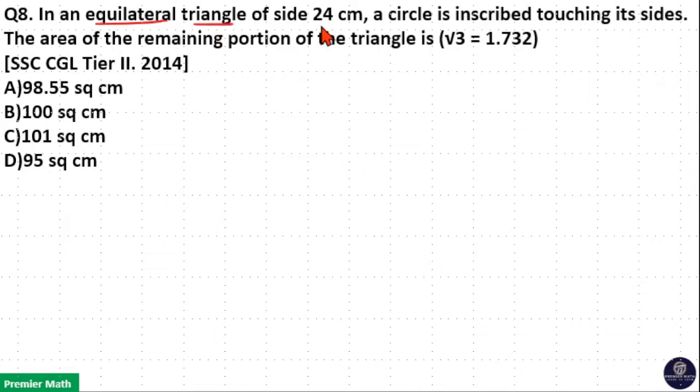In an equilateral triangle of side 24 cm, a circle is inscribed touching its sides. The area of the remaining portion of the triangle is, take √3 as 1.732.